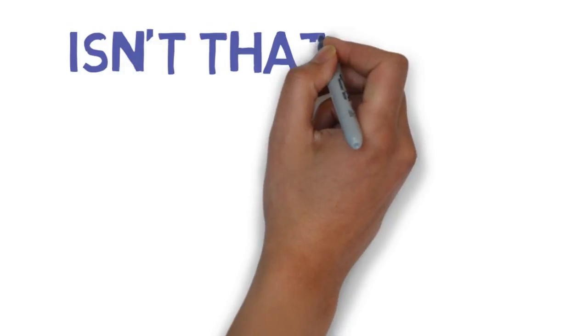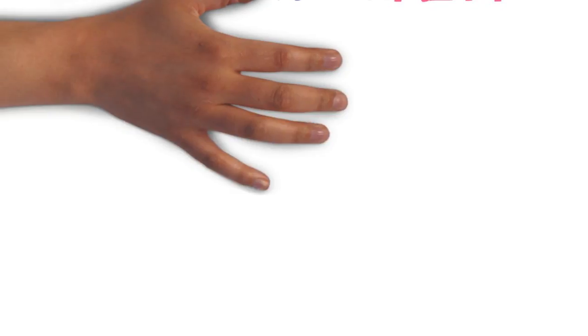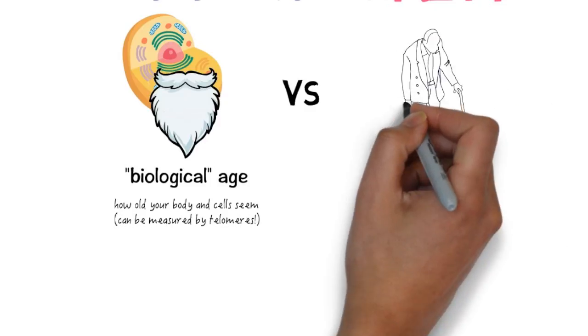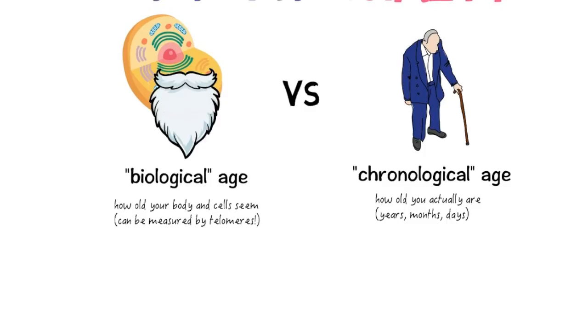Isn't that crazy? It suggests the concept of a biological age of your cells, rather than a traditional chronological age, and explains why immortality is not possible. Well, at least not yet.